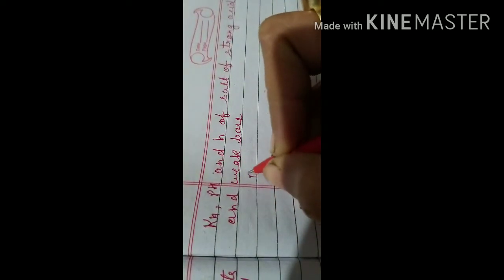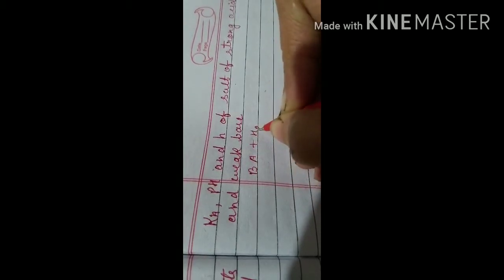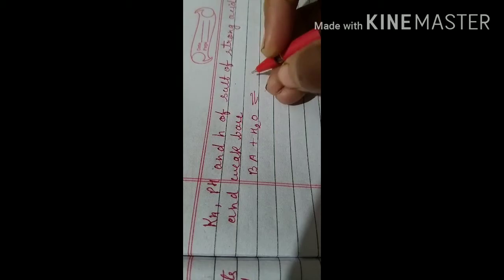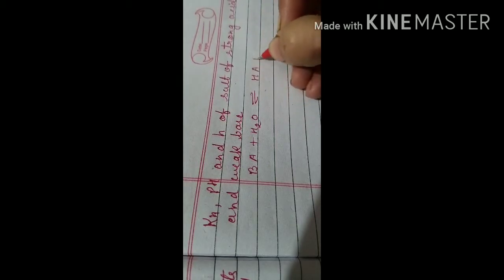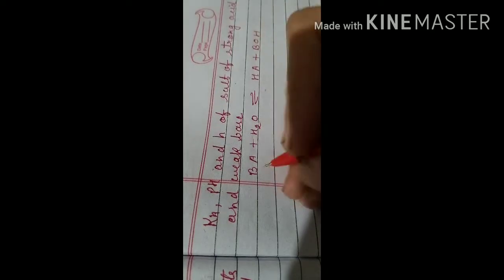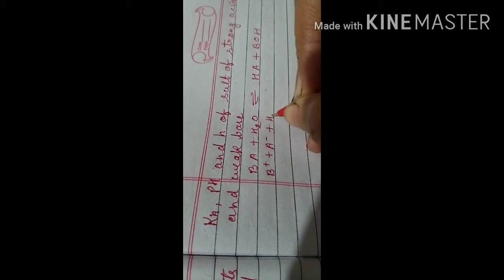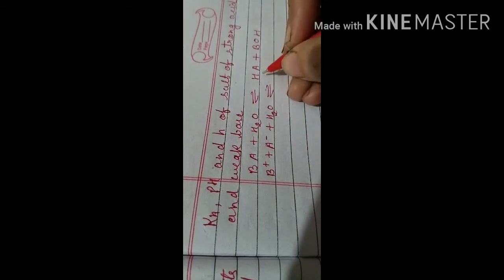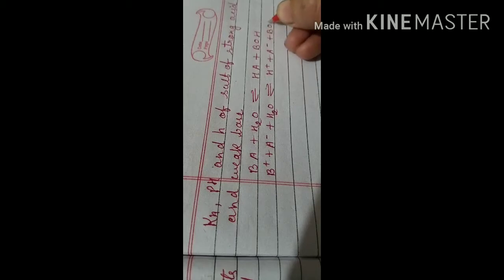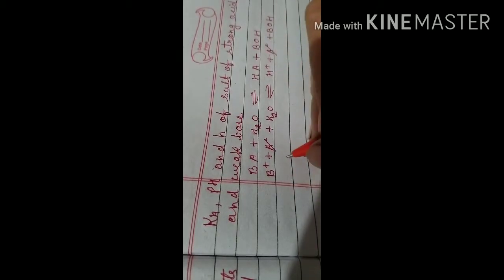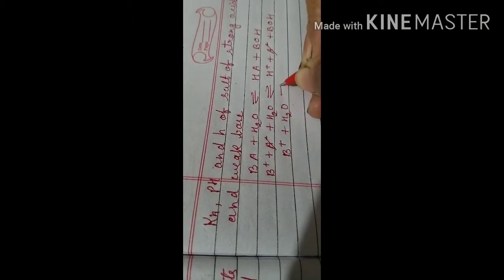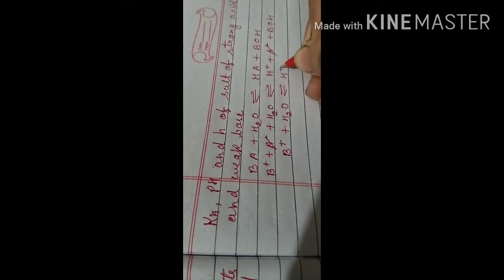Let us consider BA is a salt dissolving in water. It will dissociate into HA and BOH, giving B⁺ and A⁻ ions. Since the acid is strong, it fully dissociates into H⁺ and A⁻. The A⁻ ions cancel out, and we get the case of cationic hydrolysis — the cation dissolves in water, creating an acidic medium with H⁺ ions.